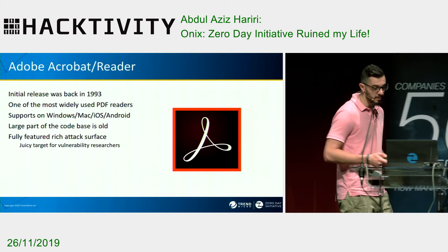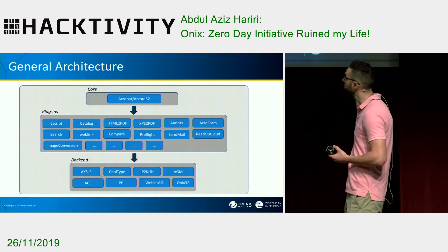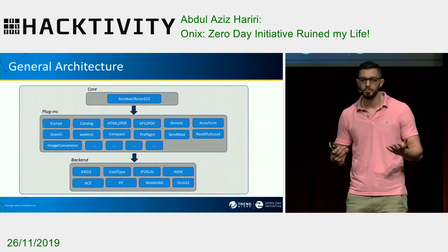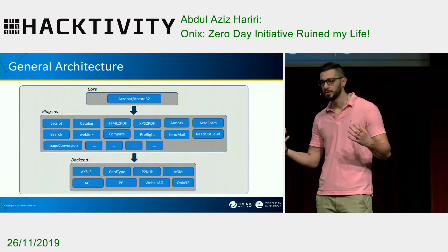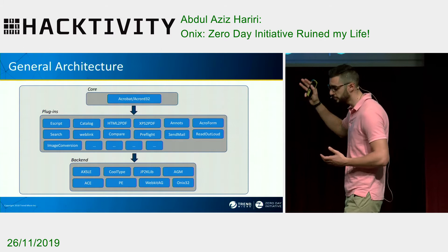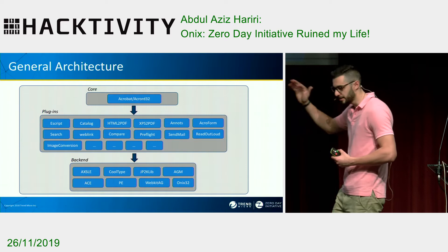The architecture has not changed much over time. I divided the architecture of Acrobat or Reader into three components, which is the core — technically that's Acrobat or AcroRD. Acrobat is the paid version, which is Acrobat Pro or Acrobat Pro DC, and it allows you to do creation, editing, adding forms. The free version is Reader, which is AcroRD32. The core is Acrobat or AcroRD DLL and EXE — that's where the core application is.